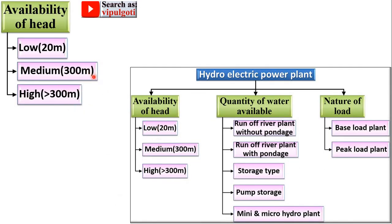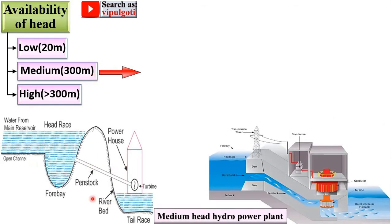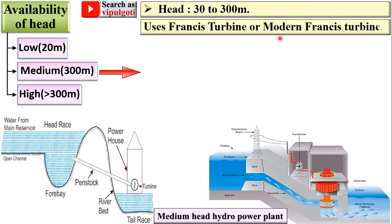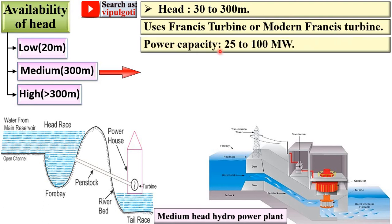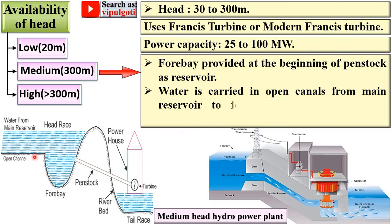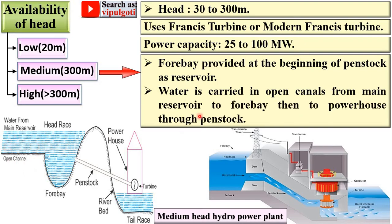For the medium head plant, the head is 30 meters to 300 meters, and Francis or modern Francis turbines are used. Power capacity is 25 megawatts to 100 megawatts. A forebay is provided at the beginning of the penstock, serving as a reservoir. Water is carried in an open canal from the main reservoir to the forebay, and then to the powerhouse through the penstock.